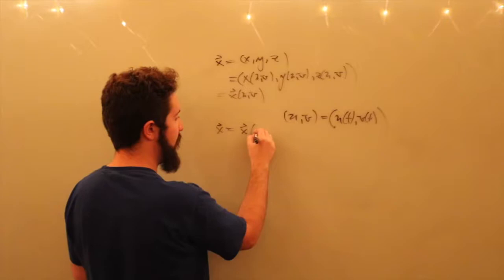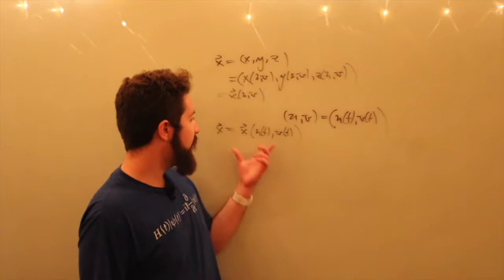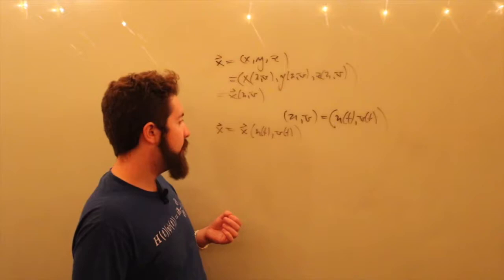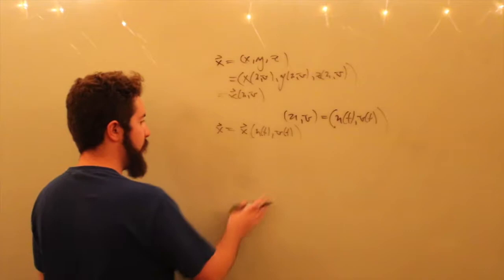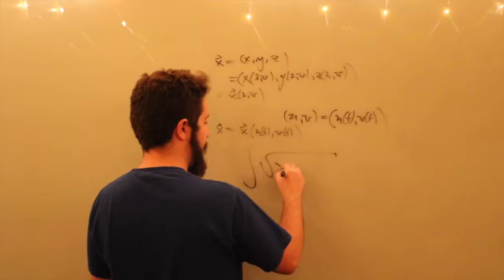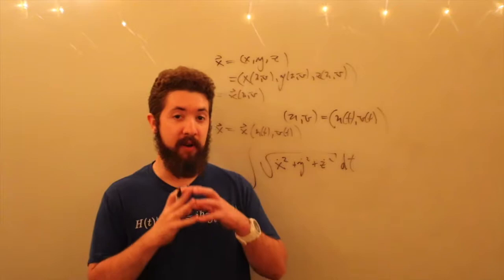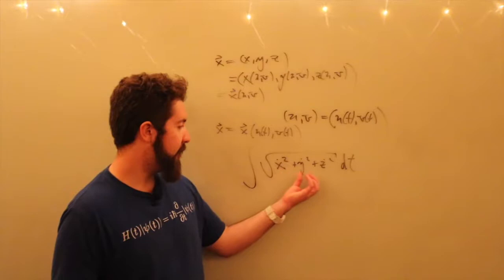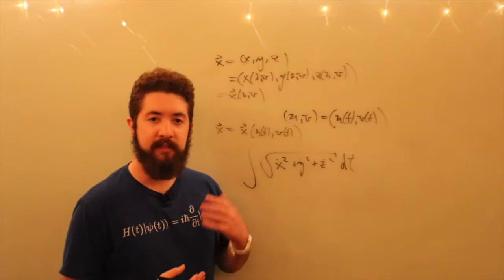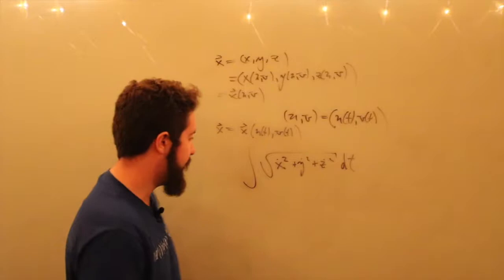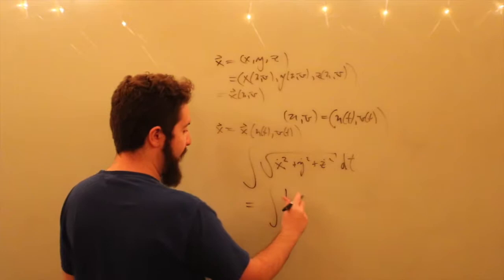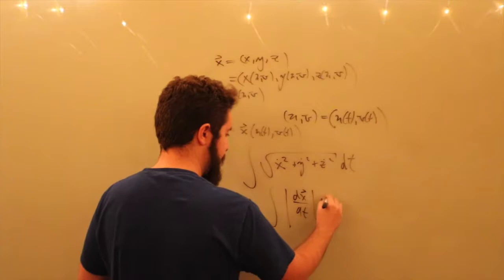This means x is essentially x(u(t), v(t)), and we're interested in minimizing arc length in three-dimensional space, which is the integral of the square root of x-dot squared plus y-dot squared plus z-dot squared dt. Another way of writing this is minimizing the integral of the magnitude of dx/dt dt.